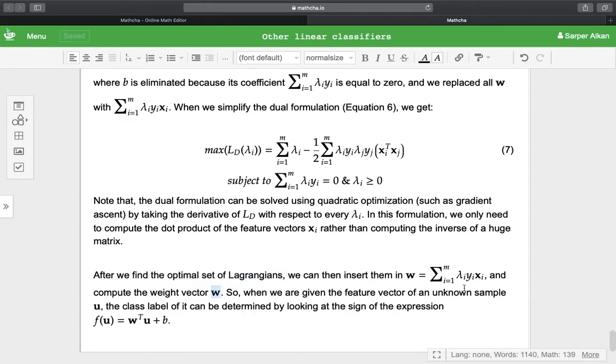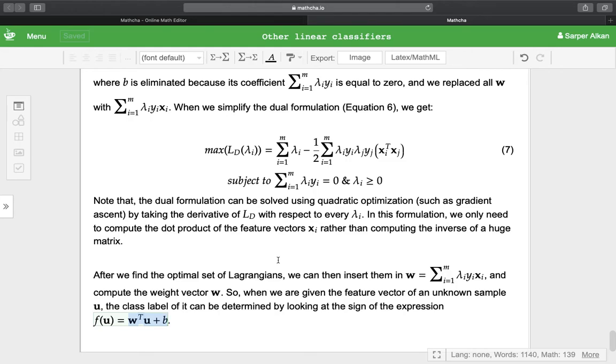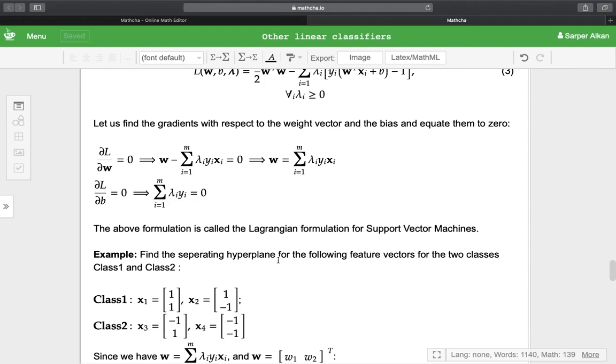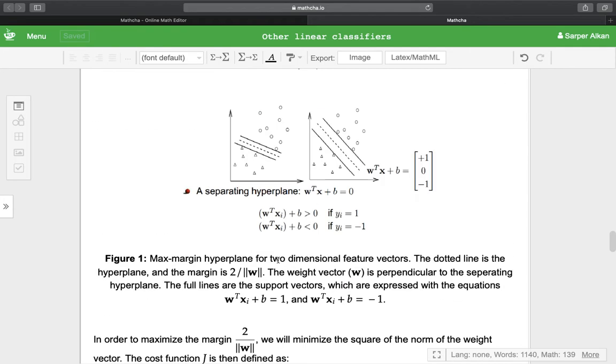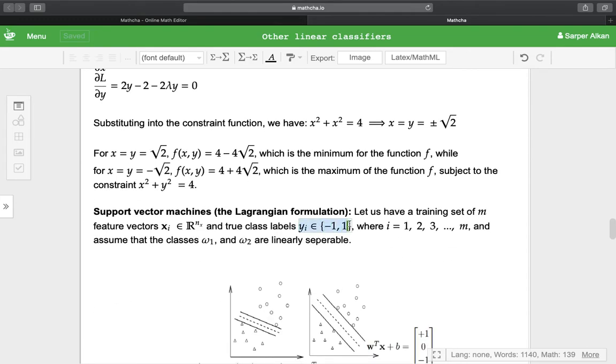When we are given the feature vector of an unknown sample u, its class label can be determined by looking at the sign of W^T u + B. If the sign of this expression is positive, we know the class is +1, belonging to the second class.